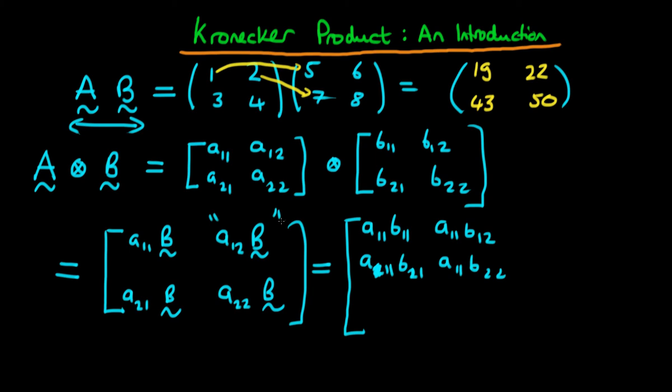For this set of four components, we have A12 times the corresponding elements in B, so A12 times B11, A12 times B12, then A12 times B21, and finally A12 times B22.